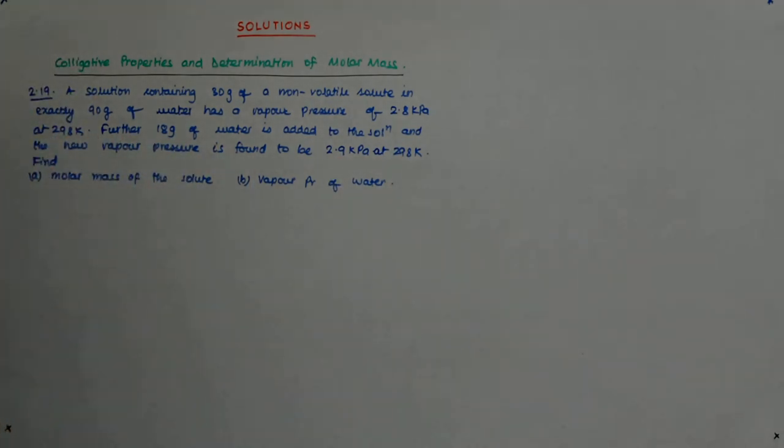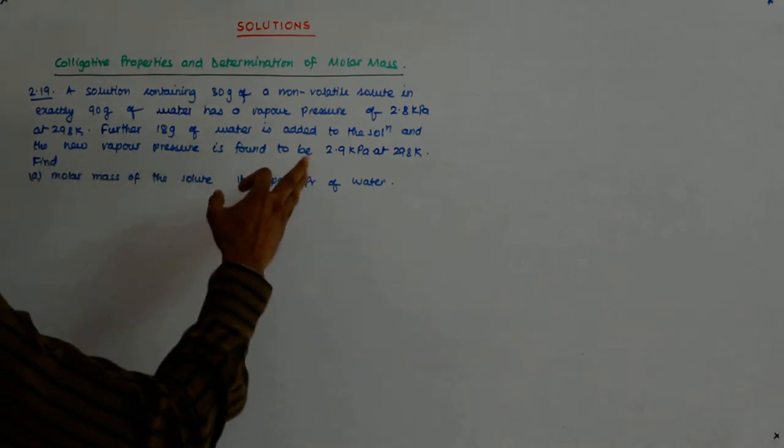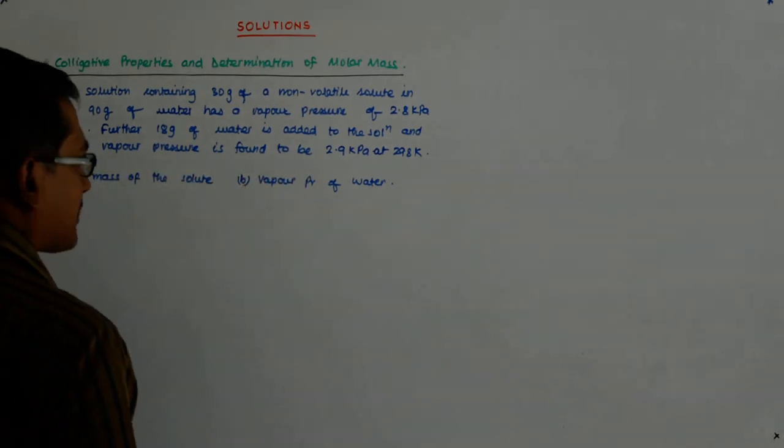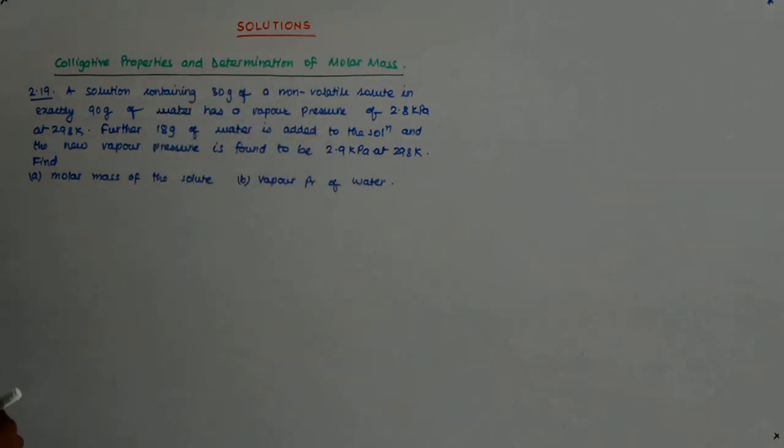Further, 18 gram of water is added to the solution and the new vapor pressure is found to be 2.9 kilopascal at 298 K. Find the molar mass of the solute and vapor pressure of water.